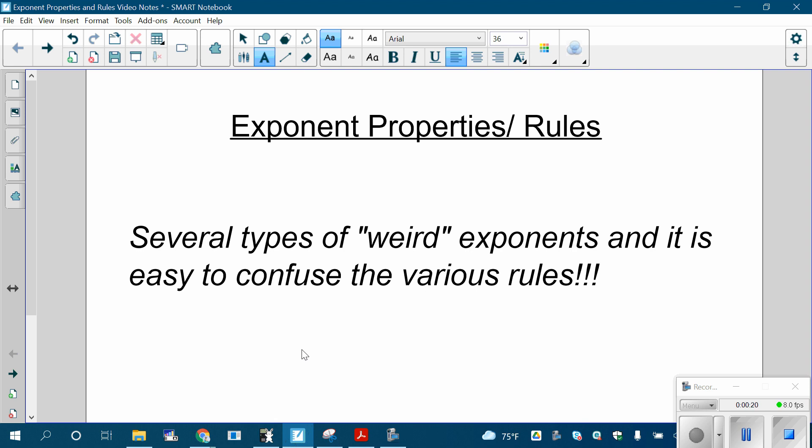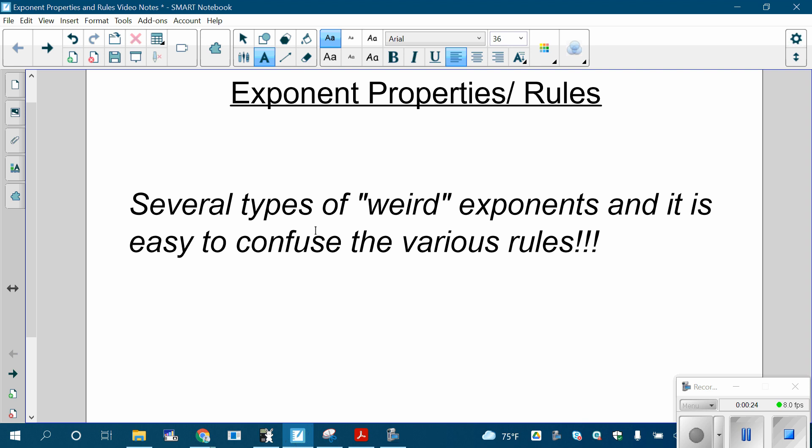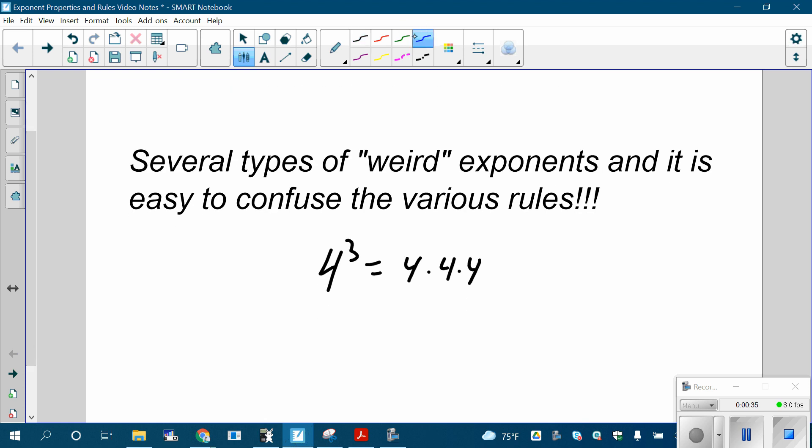There's just different rules for dealing with those weird exponents, and I just want to go over those. I trust that you guys know, like, when you're doing 4 to the third, that means it's 4 times 4 times 4. You have to do this arithmetic in your head or on paper without a calculator, so 4 times 4 is 16, 16 times 4 is 64.